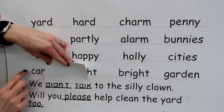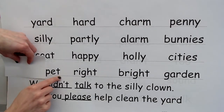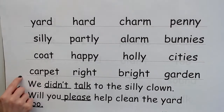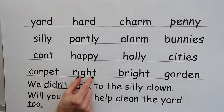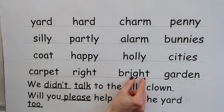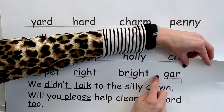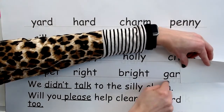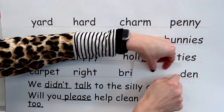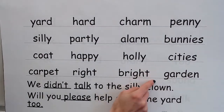Sound — R; syllable — car. Sound — Eh; syllable — pet. Blend — car-pet; word — carpet. Yes, carpet. Sound — eye, word — write. Sound — eye, word — bright. Sound — R; syllable — gar. Sound — Eh; syllable — den. Blend — garden; word — garden.